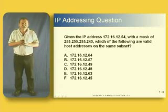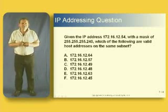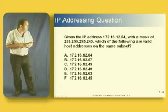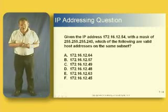And what it says here is given the IP address 172.16.12.54 with a mask of 255.255.255.240, which of the following are valid host addresses on the same subnet? And then we've got a whole list of addresses, some of which are hosts, some of which are network addresses, some of which are broadcast addresses. We've got to work out which ones are which. So let's see how we go about that.